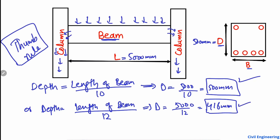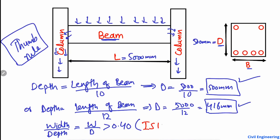Another rule states that the width-to-depth ratio — W divided by D — should always be greater than 0.40. This is according to Indian Standard IS 13920, which specifies that your width-to-depth ratio should be greater than 0.40.